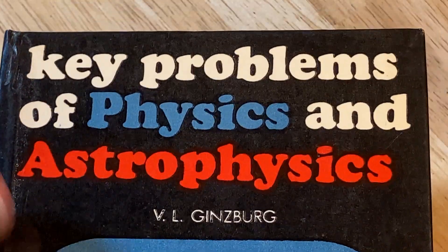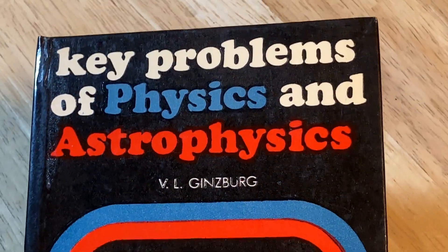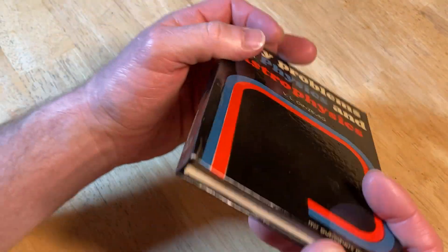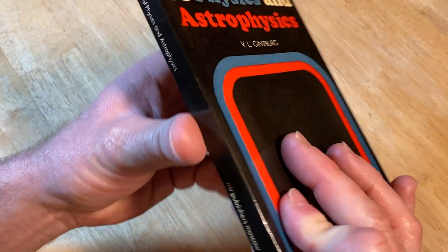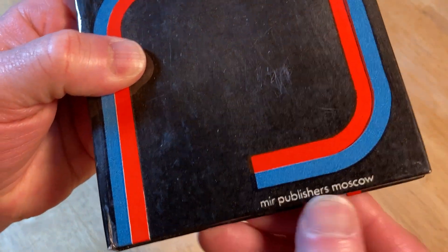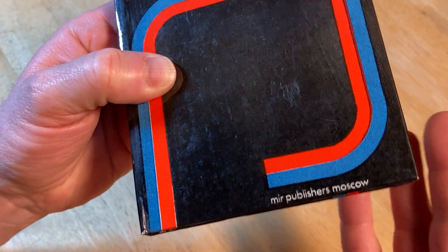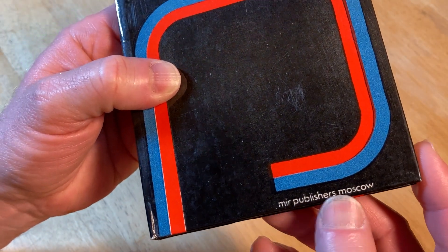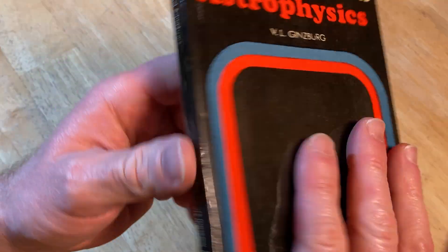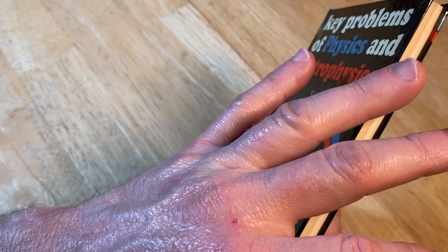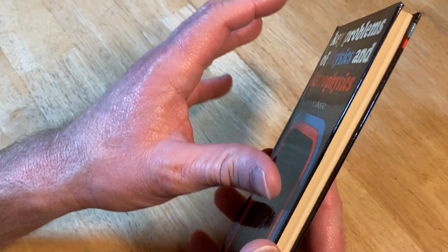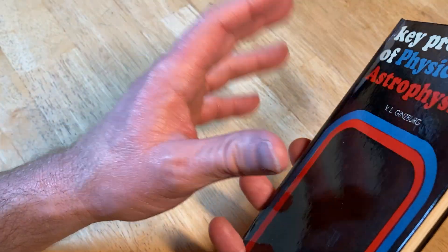So this is an extremely rare book, and I want to show it to you in this video. It's a very small book, very thin. It's published by Mir Publishers Moscow, which was, I don't know if they still are, a publishing company during the Soviet Union.